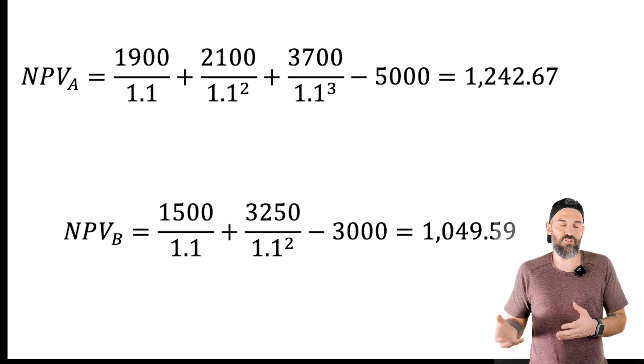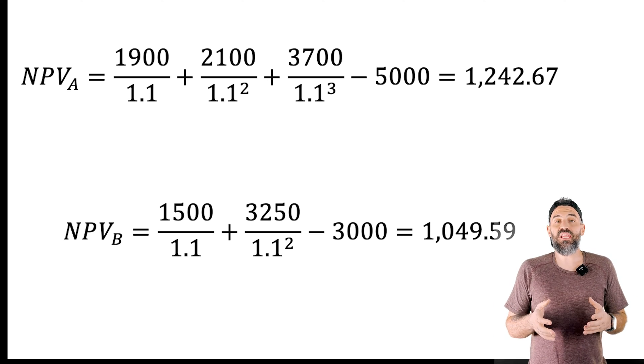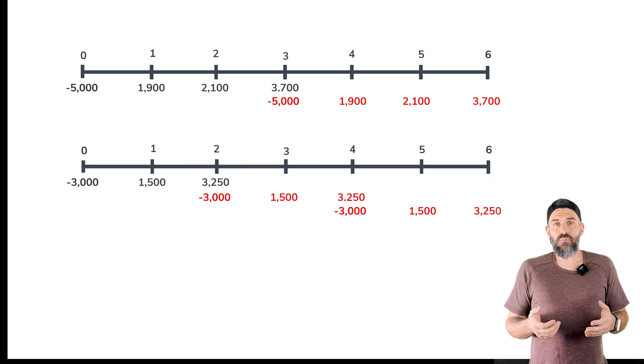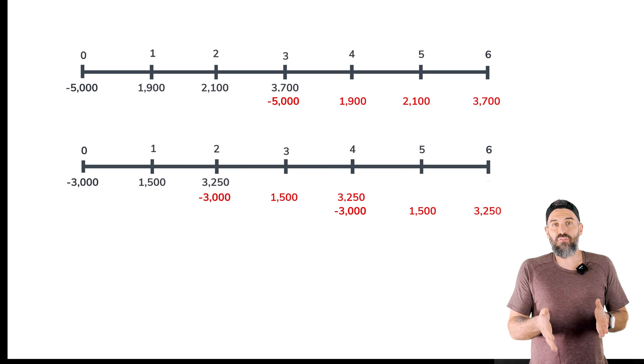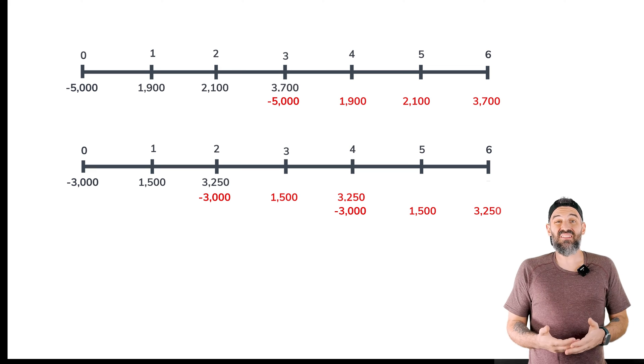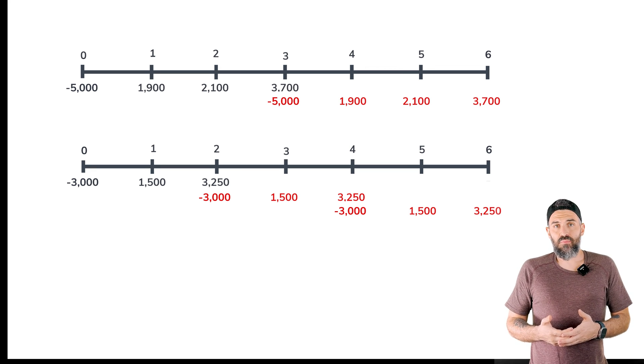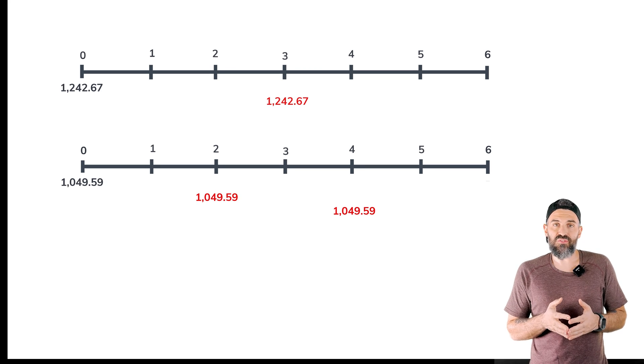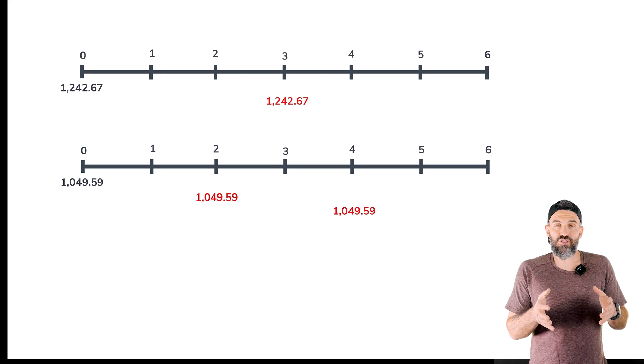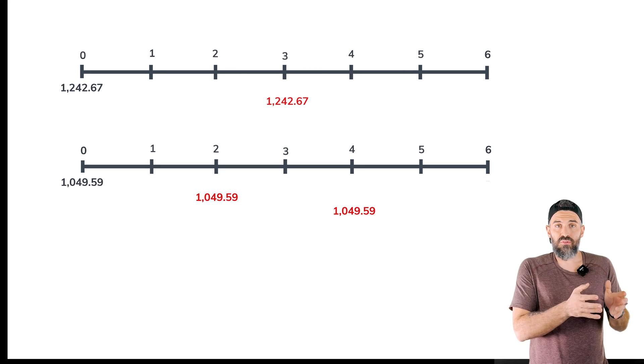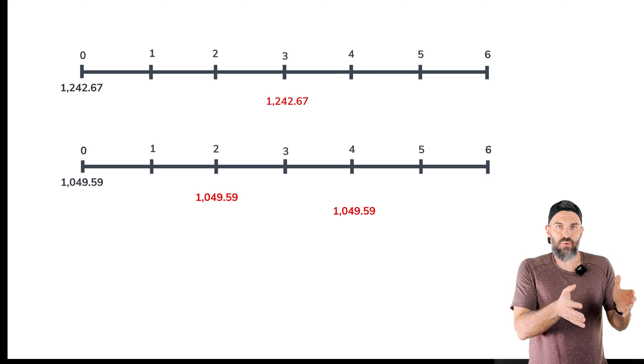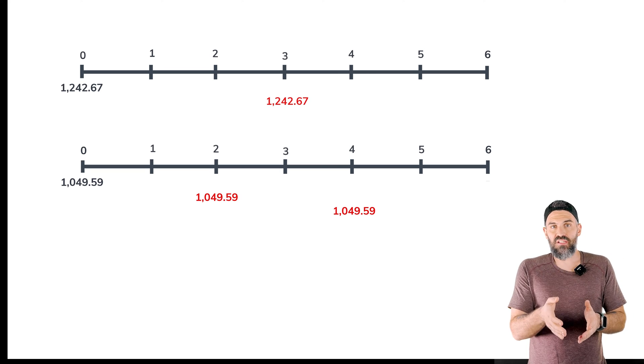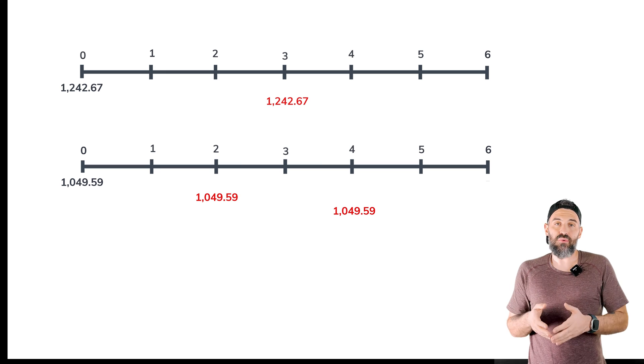Now comes the chain replication. Since we're replicating investment A two times you would imagine that at the end of the third year the second instance of this investment would begin. So since the net present value is $1,242.67 for the project then you would have it at time zero, at the beginning of the first repetition, and at time three which would be the beginning of the second repetition.